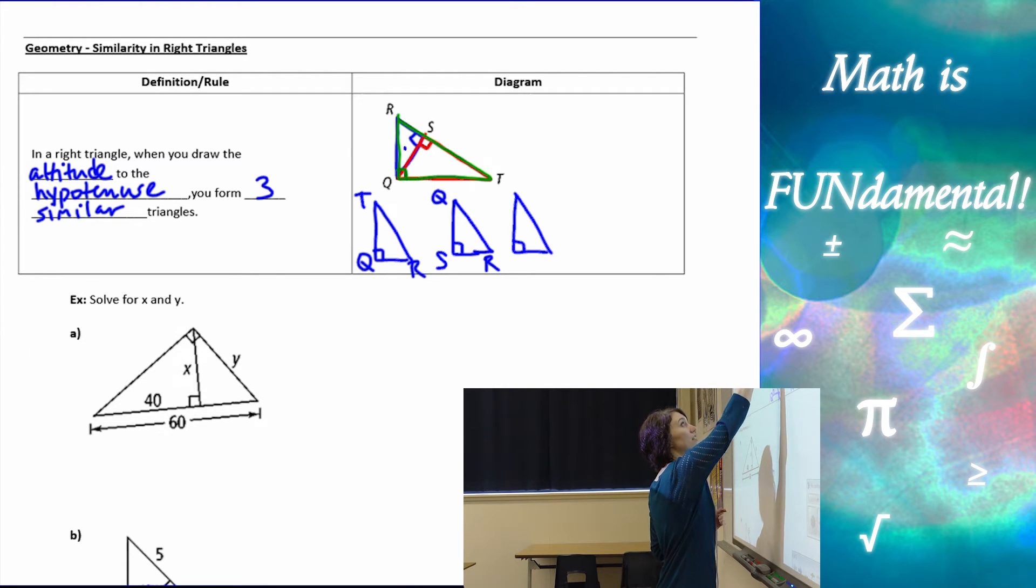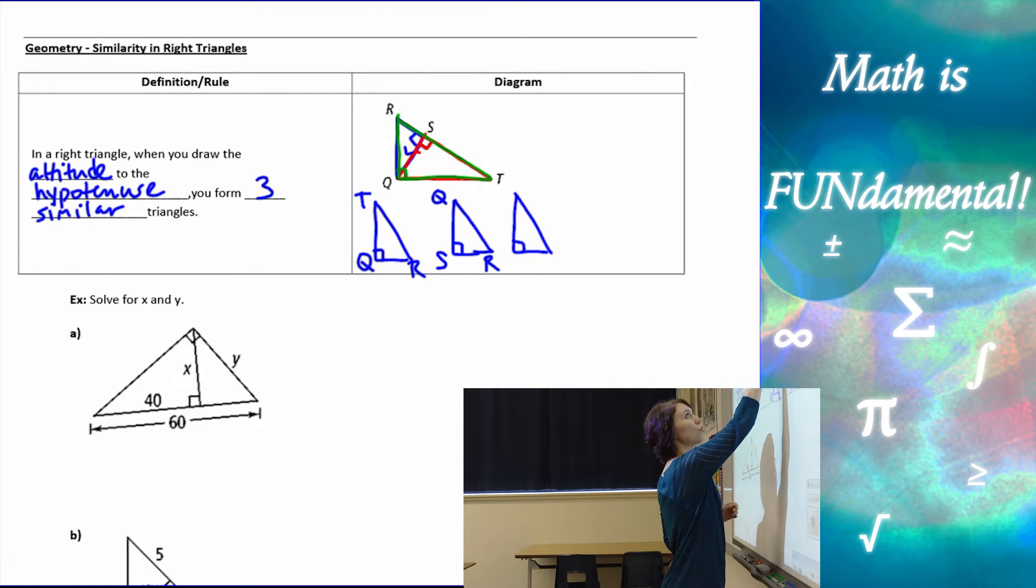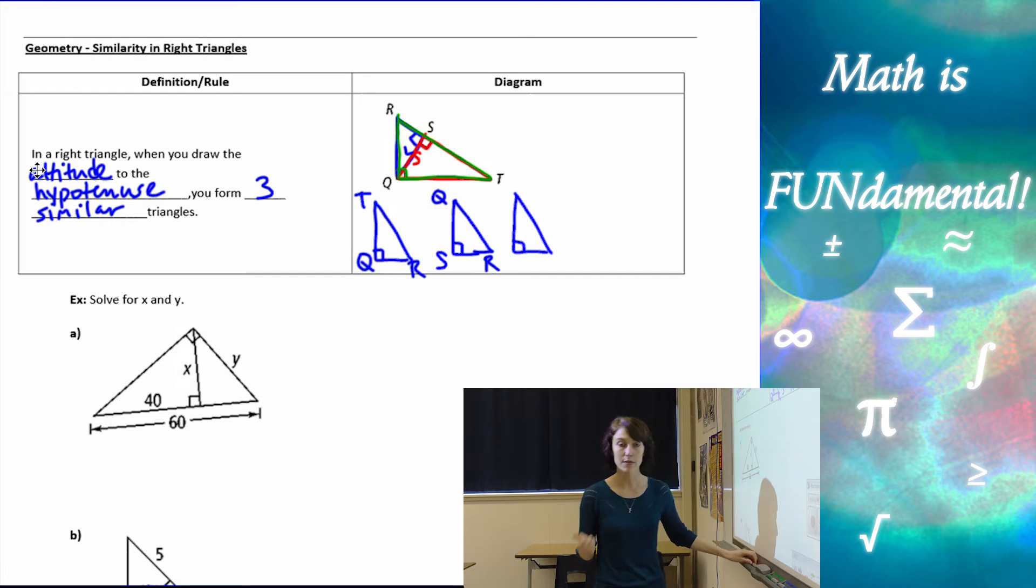So here I have this as the long side of the small triangle, and the cool thing about SQ, because it's part of the medium triangle as well, it can never be the long side of both. So if it's the long side of the smaller triangle, it has to be the short side of the medium triangle. So that kind of helps me out.